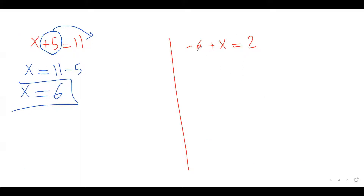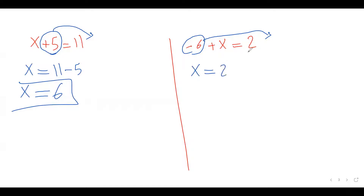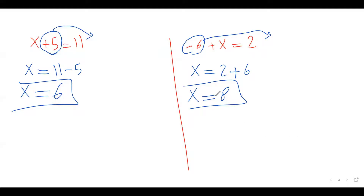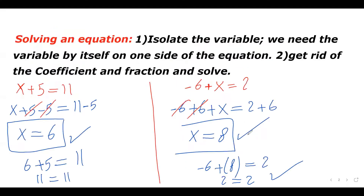For negative 6 plus x equals 2: I need x alone, so I move the negative 6 to the right side — the sign changes, so it becomes positive 6. On the left side I have x; on the right side I have 2 plus 6, which is 8. So x equals 8. This is the exact same answer, done with the alternative method.